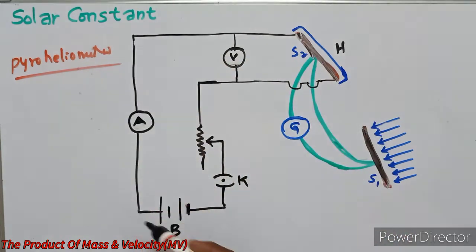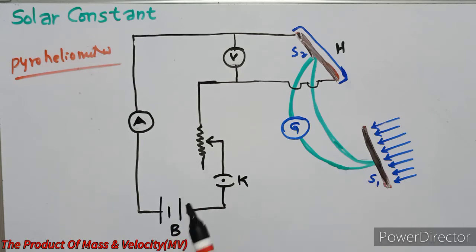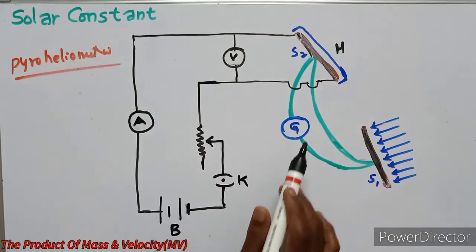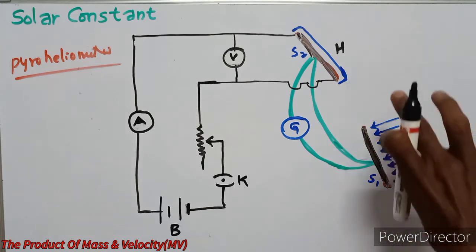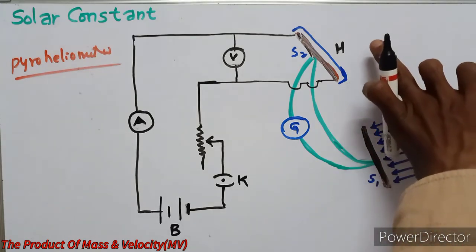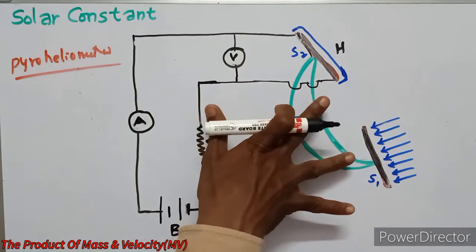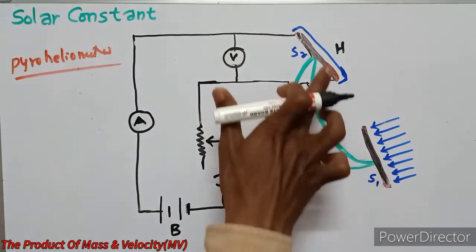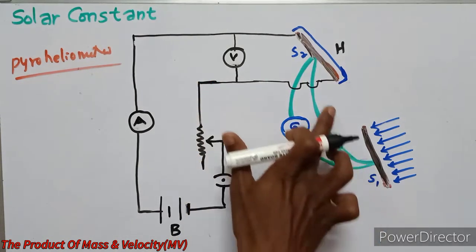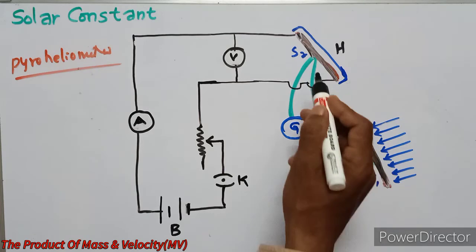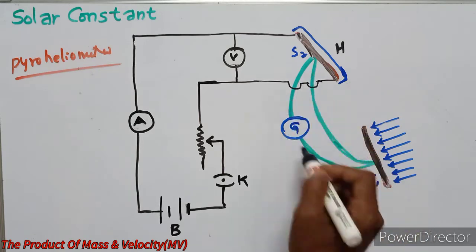The circuit is connected to a battery, resistance, key, ammeter, voltmeter, and galvanometer. The two strips are connected to the two junctions of the thermocouple. The thermocouple works via the key of the circuit.